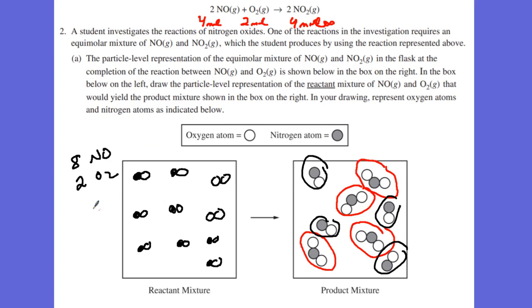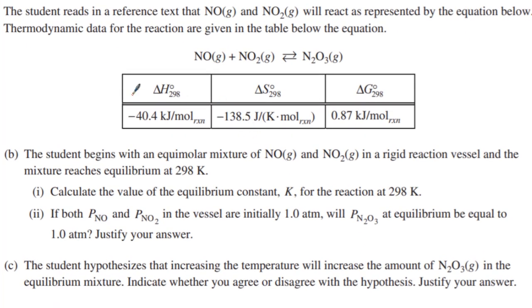Two points for Part A. Then we start going to a thermo slash equilibrium problem. You can see they gave us delta H, which is exothermic. They gave us delta S, which is negative or less entropy. And they gave us delta G, which is positive, meaning it is not thermodynamically favorable.